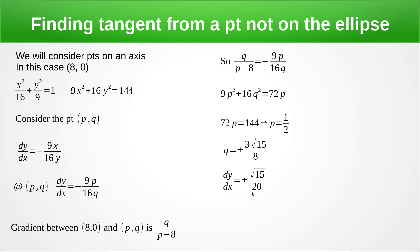And we end up with, and I'll leave it to you again, ±√15 / 20. So now we've got a point. Now, we can use the point (p,q). Obviously, it's going to be easier to use the point (8,0) and a gradient or two gradients in this case, where we can use y - y₁ = m(x - x₁) to get the equation of our tangent.